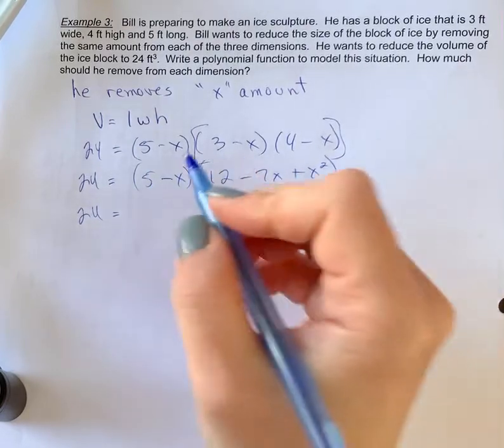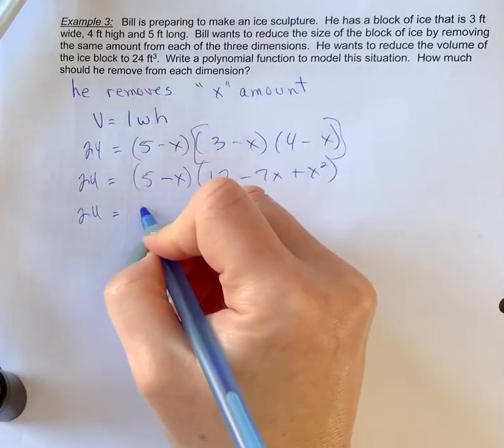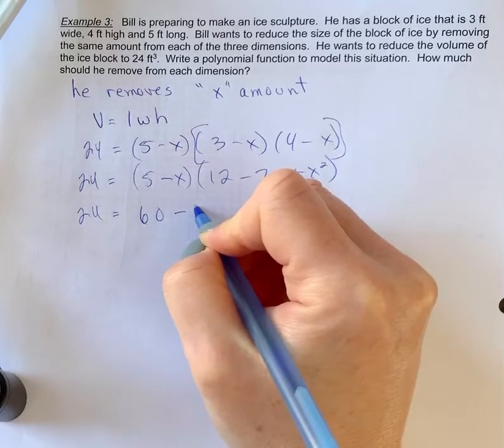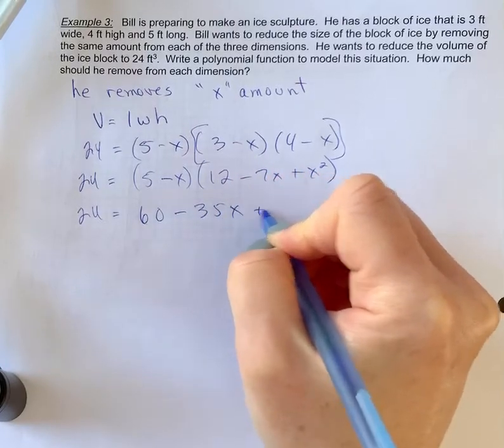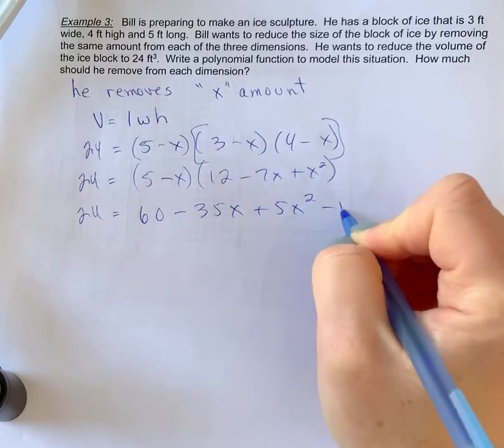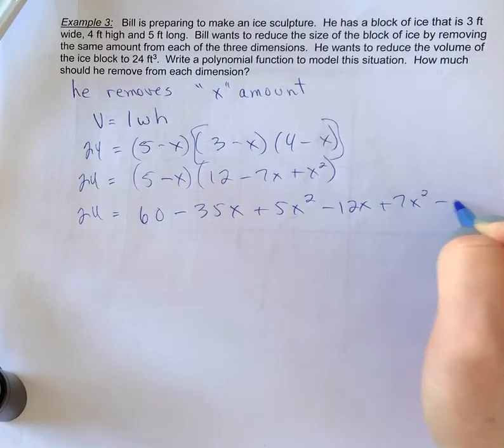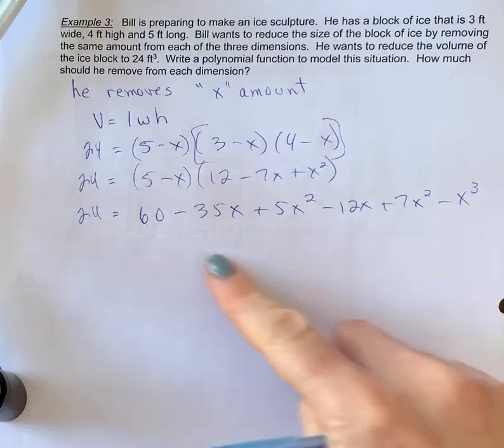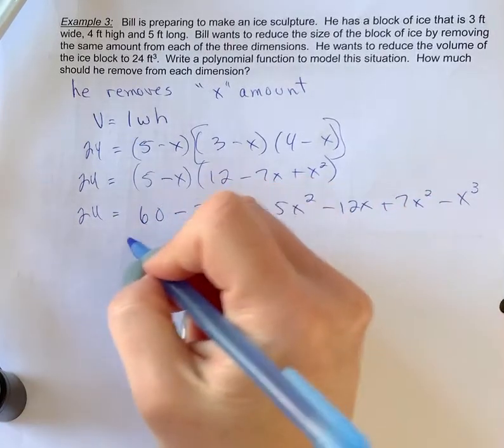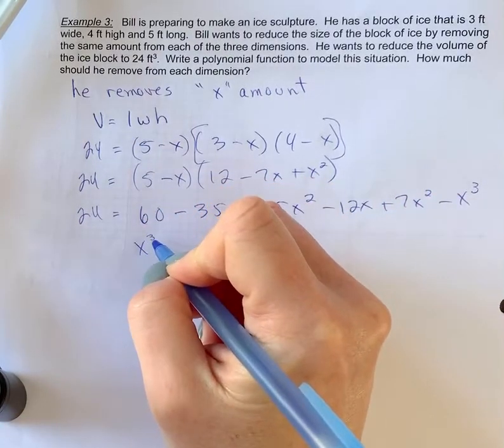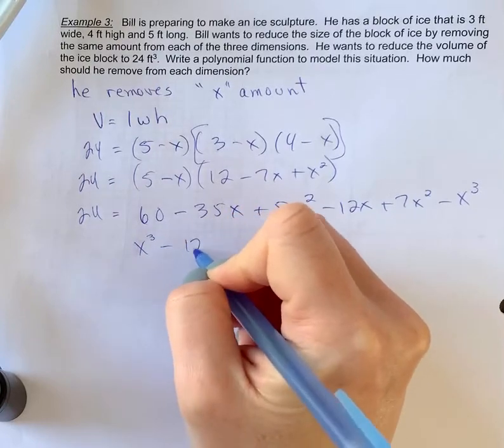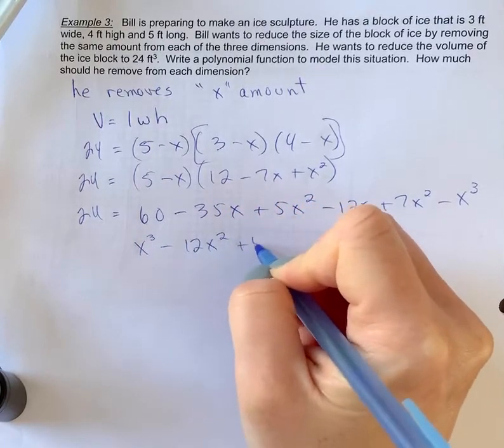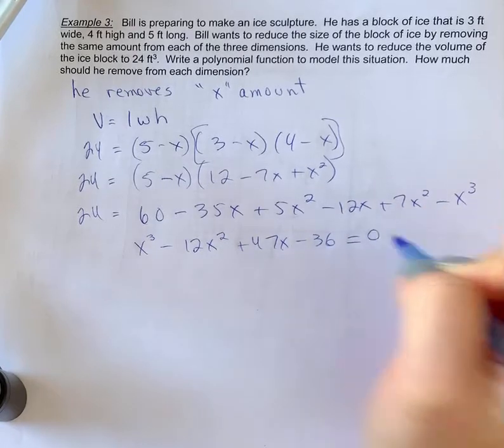When you multiply this through, which you can kind of do at your own pace, you're going to get 60 minus 35x plus 5x squared minus 12x plus 7x squared minus x cubed. We're going to combine like terms, and I'm also going to move the 24 over to this side as well. So we're going to get x cubed minus 12x squared plus 47x minus 36 equals zero.